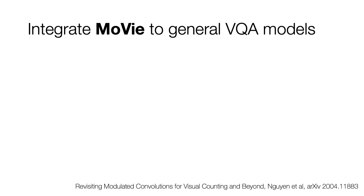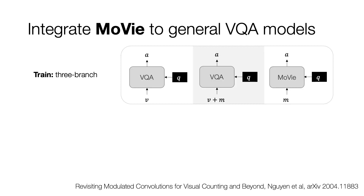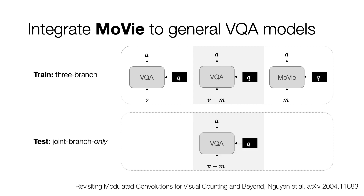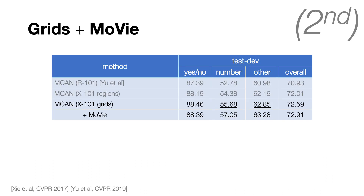It is also simple to attach MOVIE to a general VQA model as a counting module. Given the VQA model and MOVIE, during training we train three classifiers: our general VQA branch, MOVIE, and a joint branch using fused features. During testing, only the joint branch is used for prediction. By adding MOVIE into MCAN, we can increase the overall performance of MCAN, with the biggest improvement in the number category.